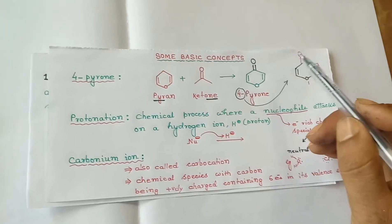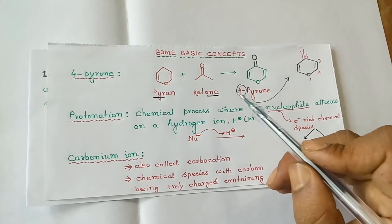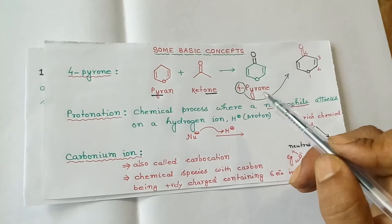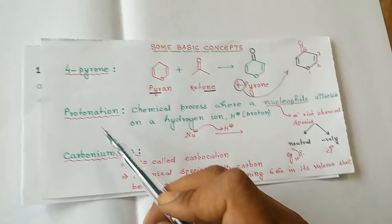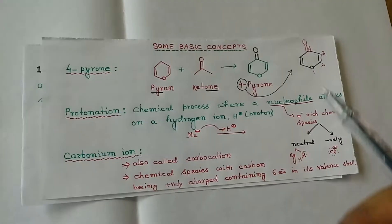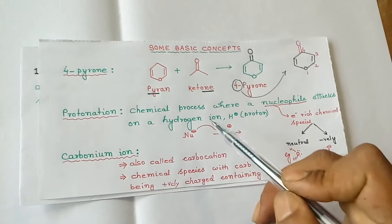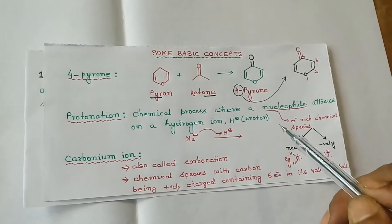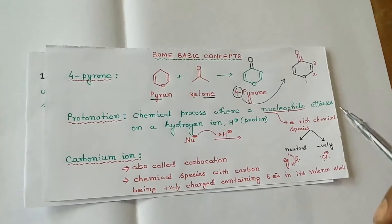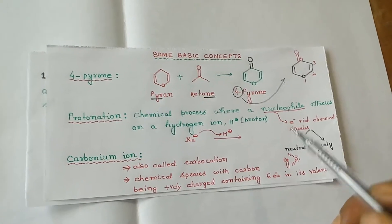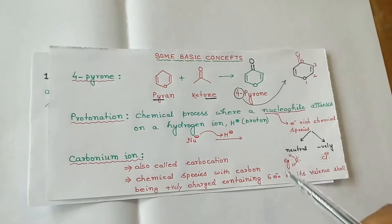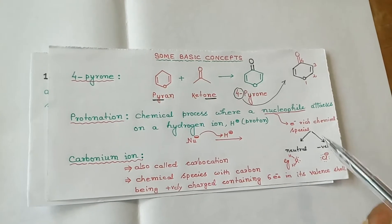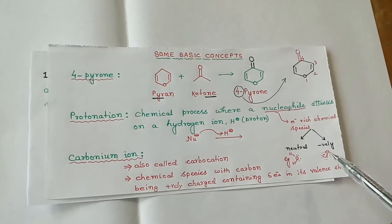Protonation is the chemical process where a nucleophile attacks a hydrogen ion, H+. A nucleophile is an electron-rich chemical species. They are of two types: neutral nucleophiles, which should have at least one lone pair, and negatively charged nucleophiles.